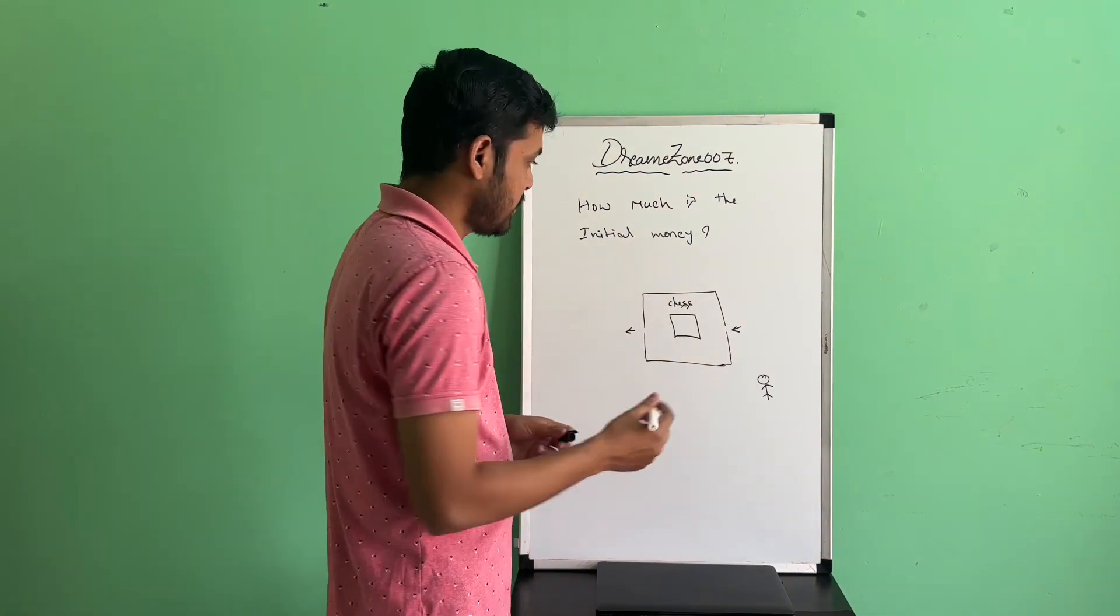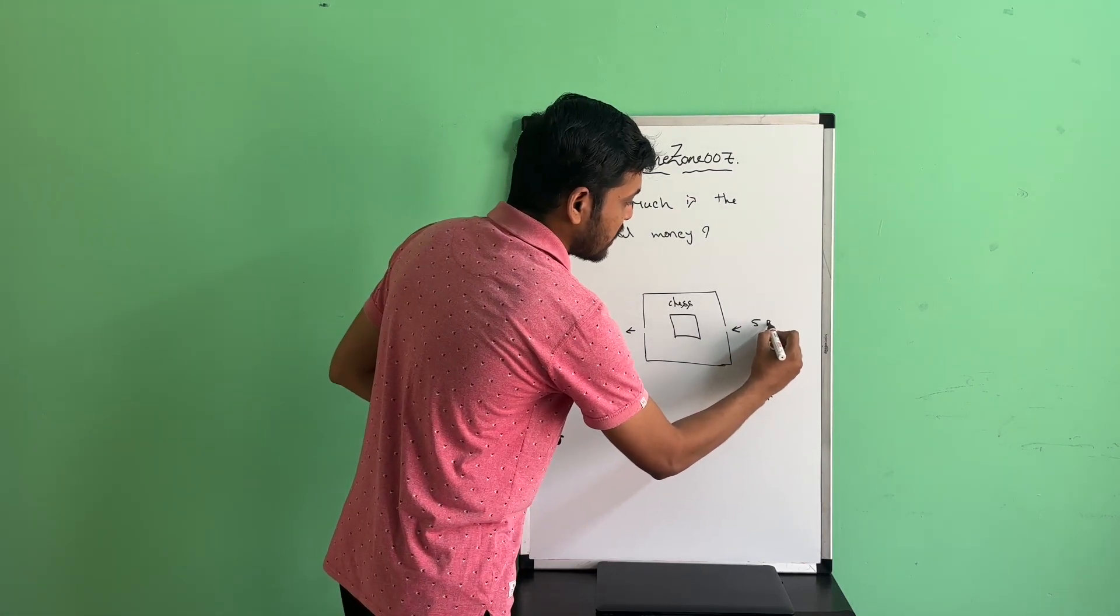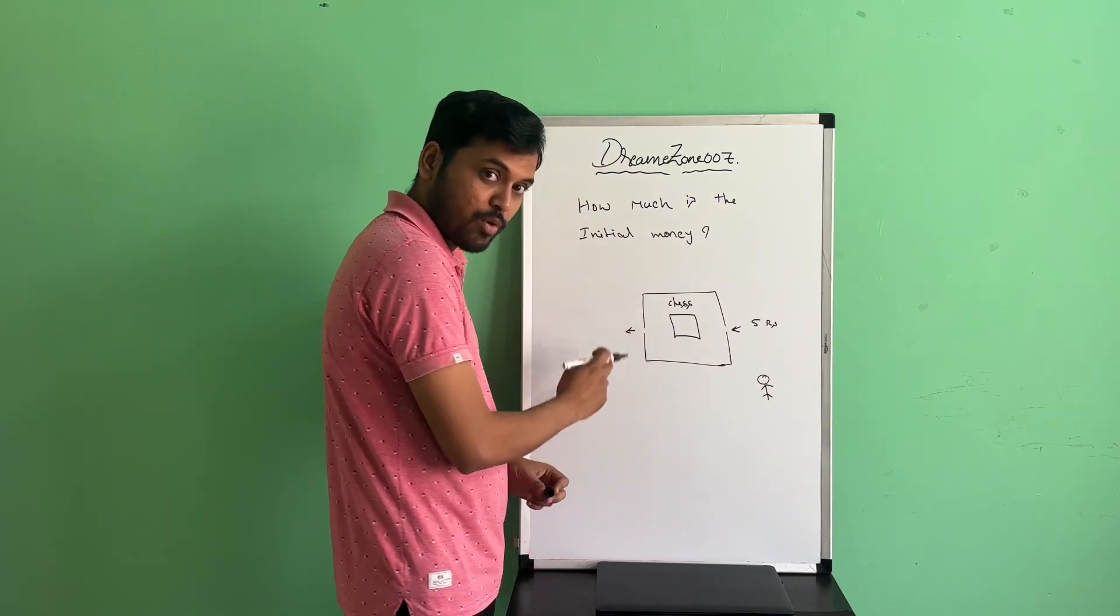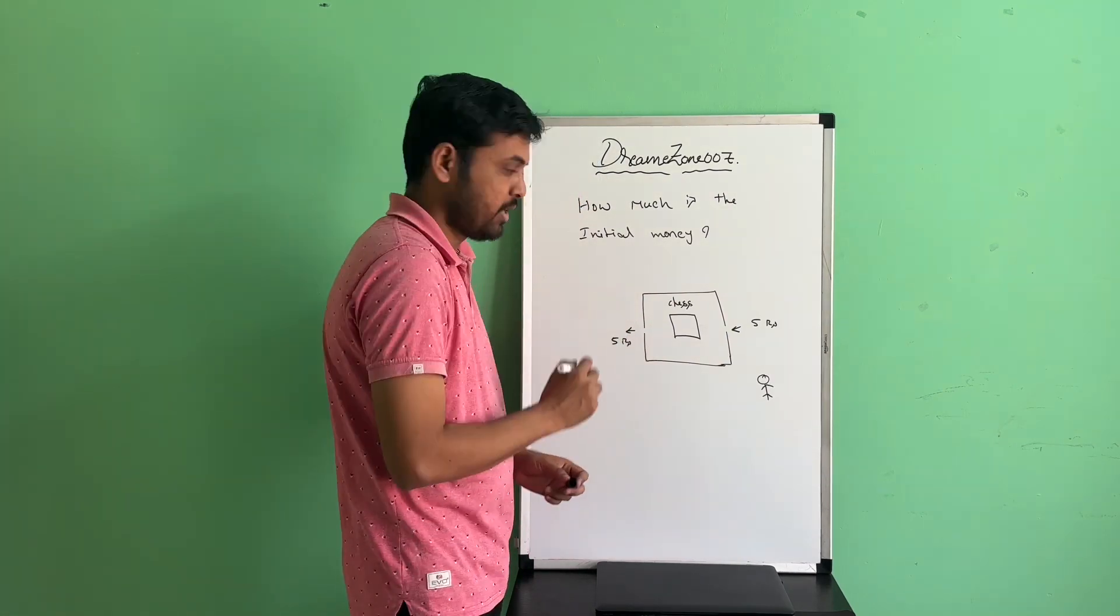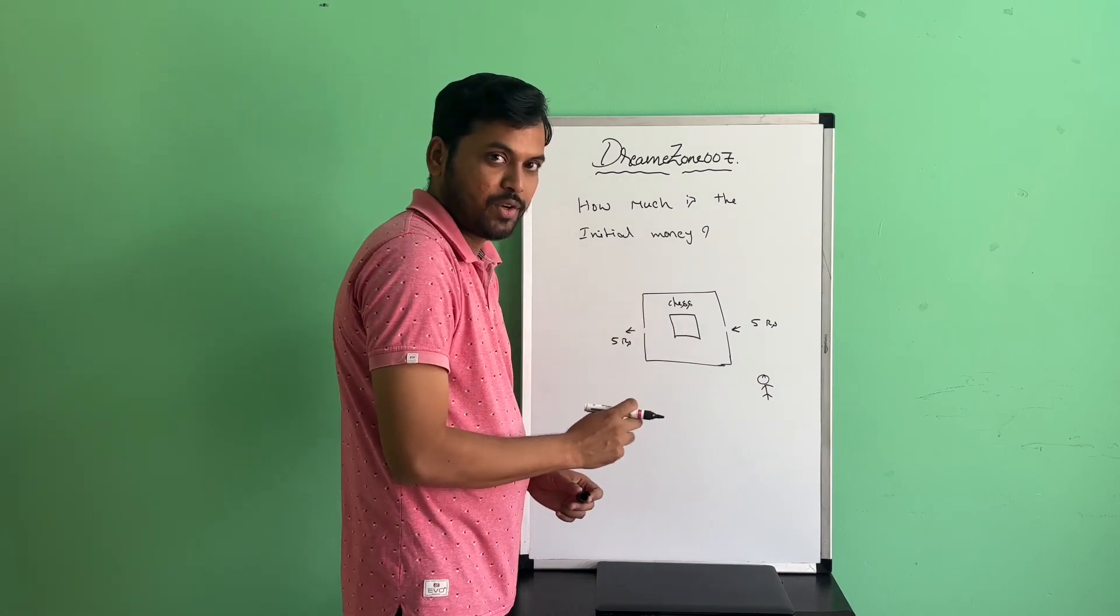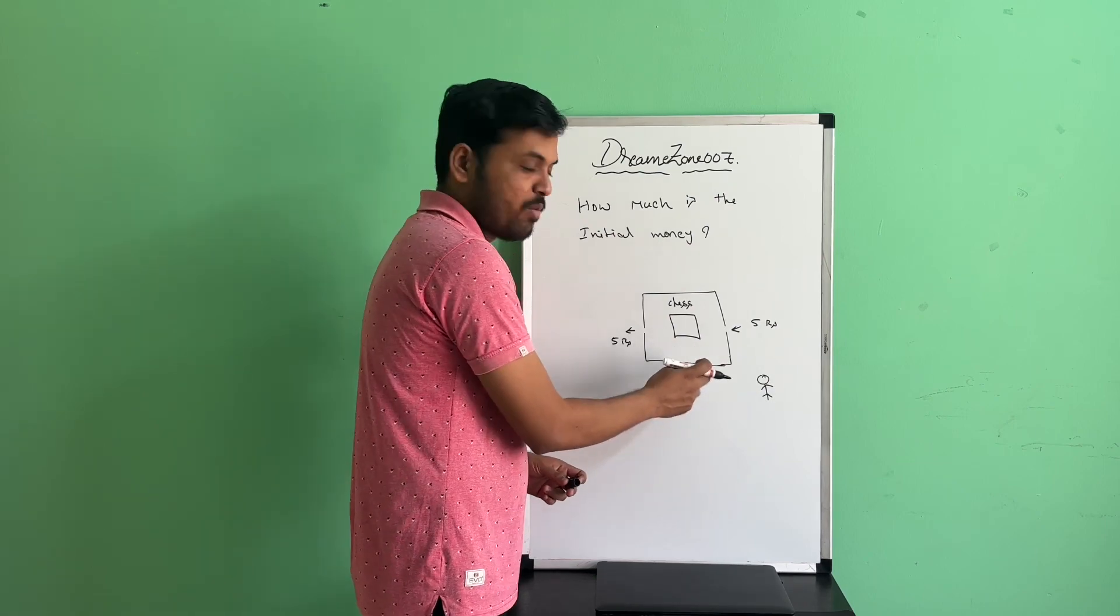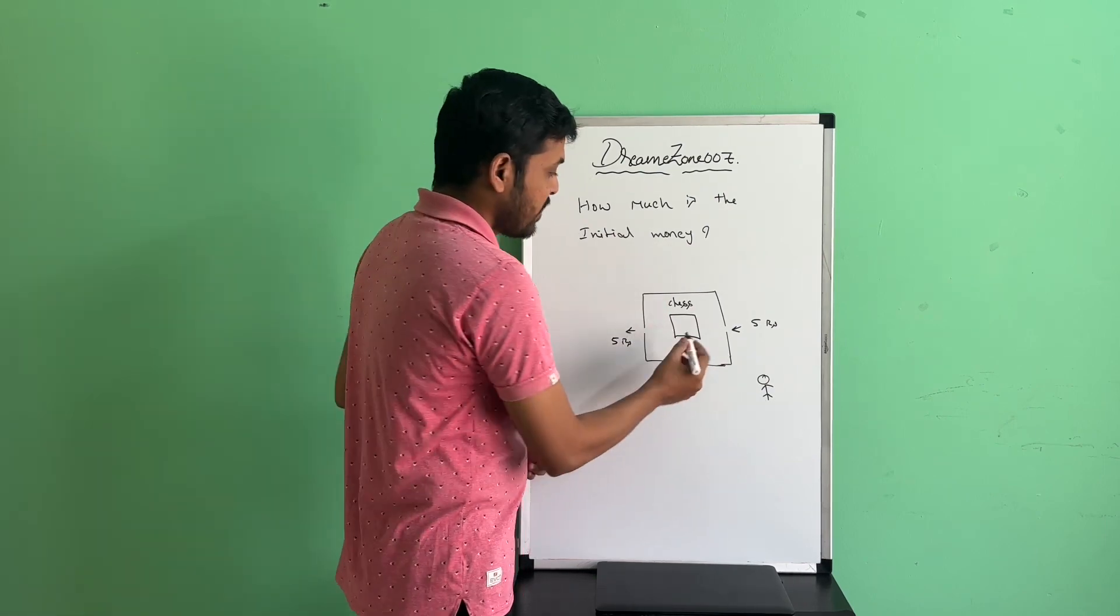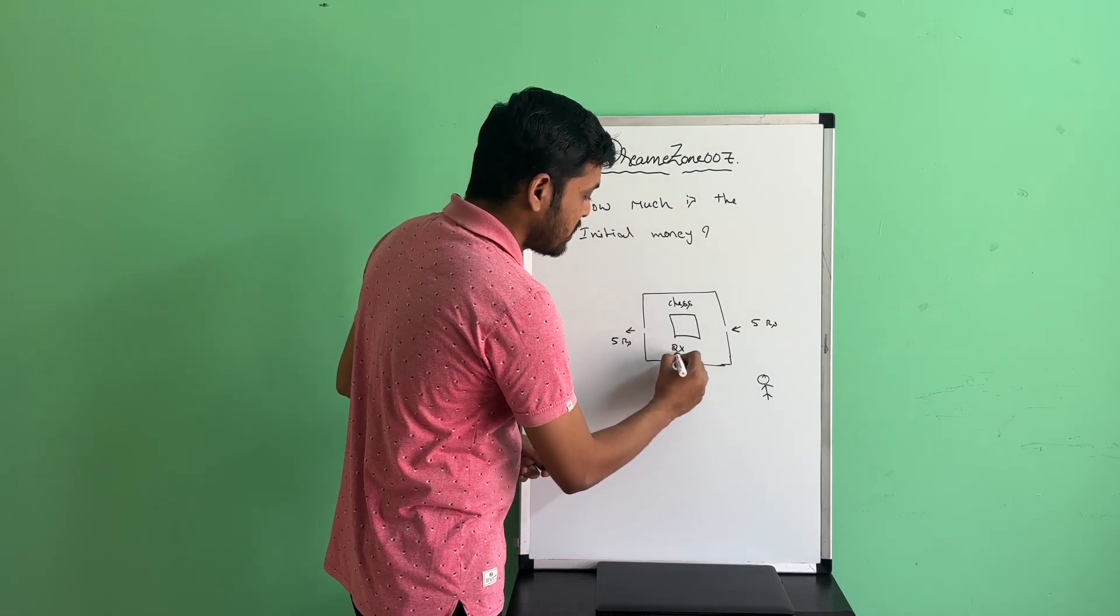So the rule is that if you want to enter into the auditorium, you have to pay 5 rupees as an entrance fee. If you want to come out of the auditorium, you have to pay 5 rupees as exit fee. And there is a game inside the auditorium. If you play the game, you have to bet all your money available at the time of playing. When you win the game, your money will become double, means it will become 2x. That's the rule.